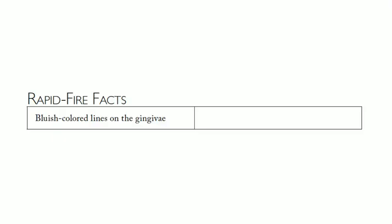Rapid fire fact: if you see bluish colored lines on the gingiva, think lead poisoning — these are called Burton's lines. That brings us to the end of Biochem 16. Hope you learned something — see you next time!